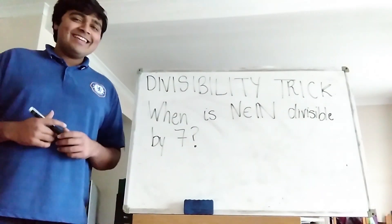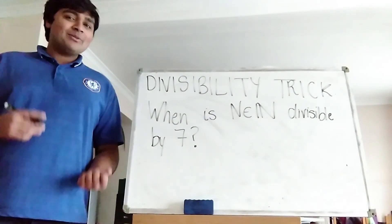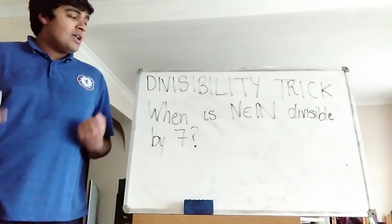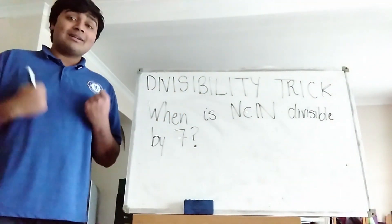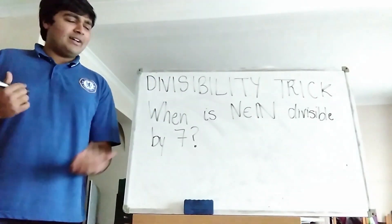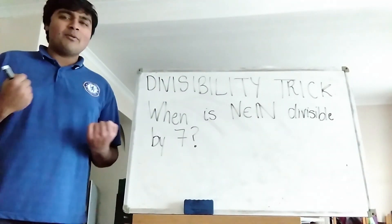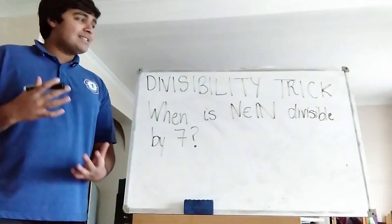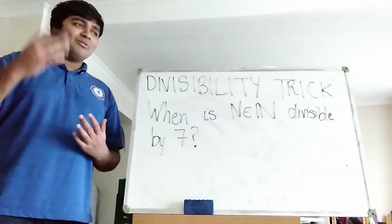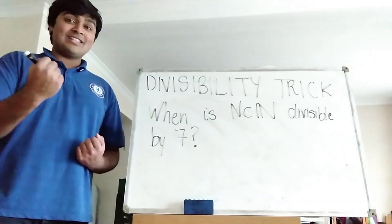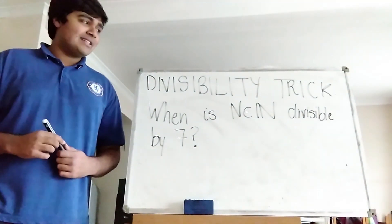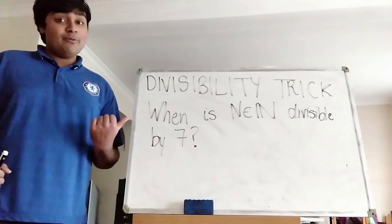Hi, thanks for joining me. Happy New Year. Today I'm going to be doing a fun sort of number theory proof and it's a divisibility trick. I want to know when a natural number capital N is divisible by 7. Of course you can just divide through and see if you get a remainder or not, if you have a calculator. But these are some tricks that you can use in perhaps some non-calculator exams, such as the maths challenges or the Olympiads. So it's a trick you should definitely know.